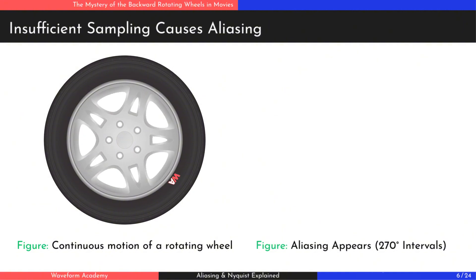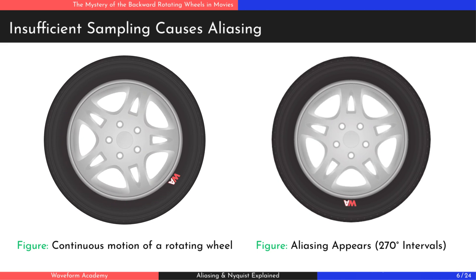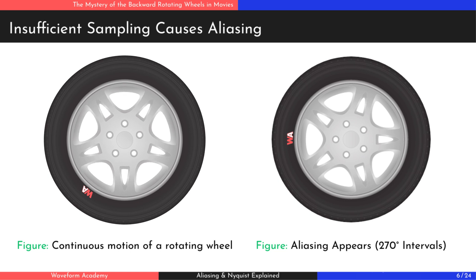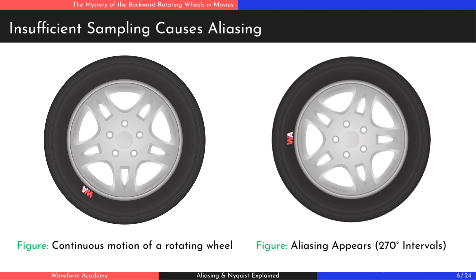In the final example, we take snapshots every 270 degrees. And here's where things get interesting. Although the wheel is rotating forward, the sampled images make it appear as though the wheel is spinning backward. This happens because our brain assumes the shortest path between the snapshots, 90 degrees backward, rather than the expected 270 degrees forward. This is the aliasing effect in action.